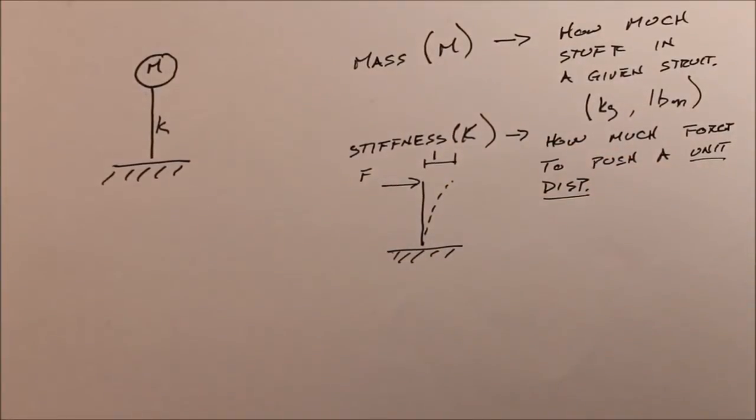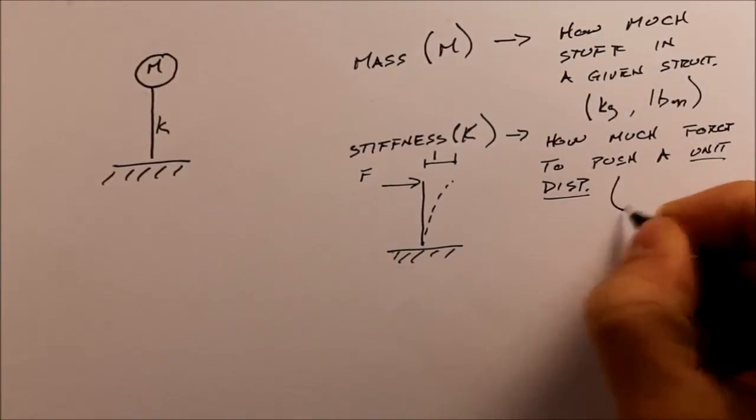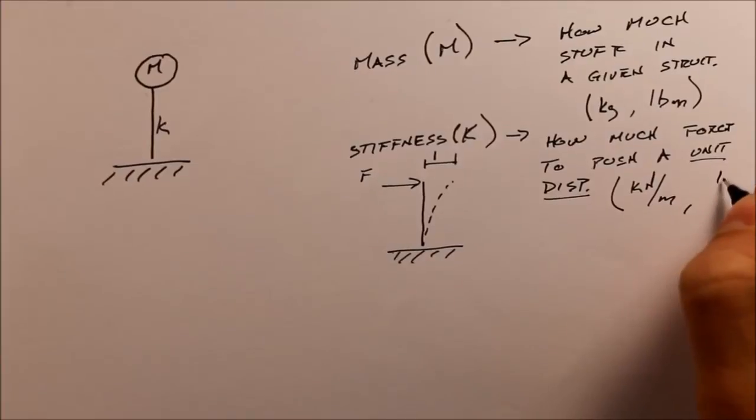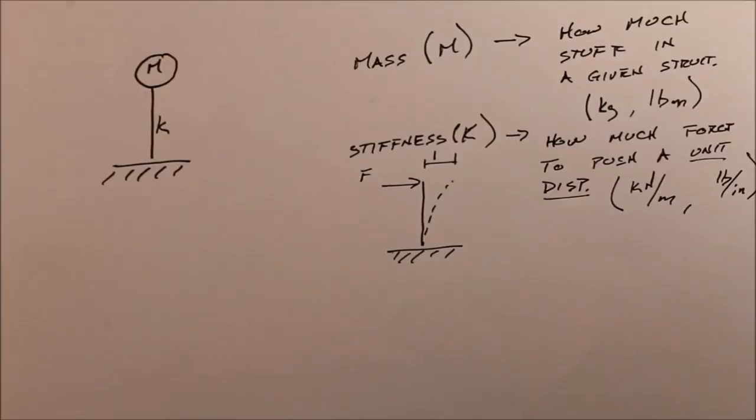That unit can be meters, it can be millimeters, it can be miles, it doesn't matter as long as it's just a one. It's essentially a ratio. So we have units for stiffness of, say, kilonewton per meter or pound per inch. It doesn't really matter as long as we stay consistent.